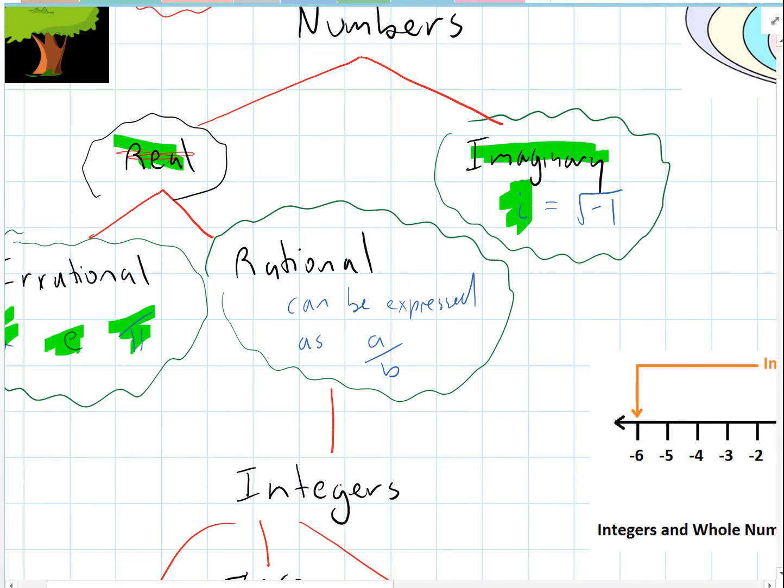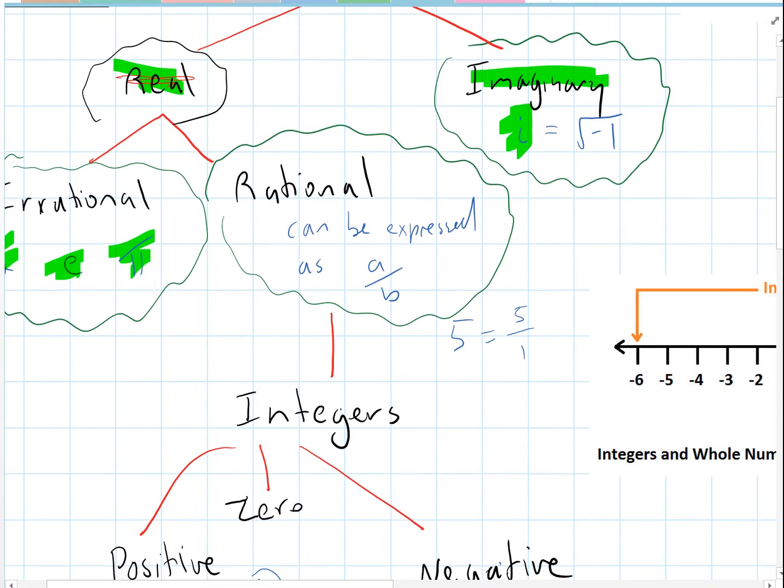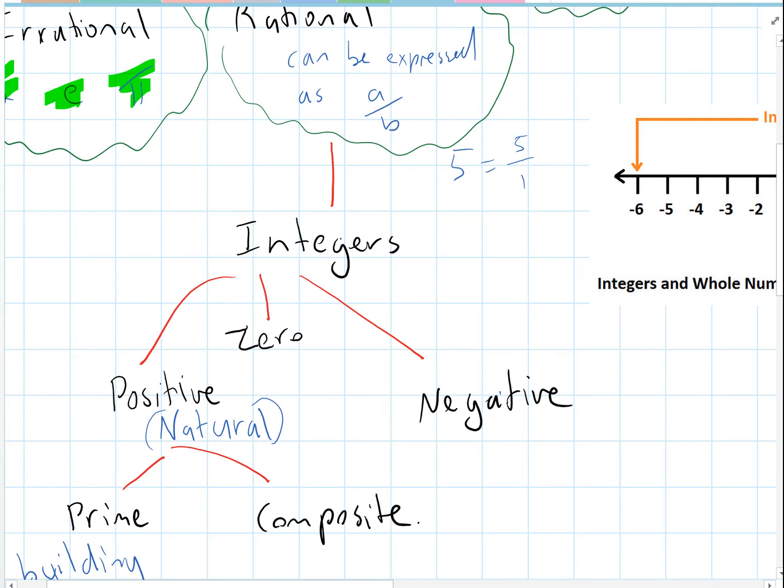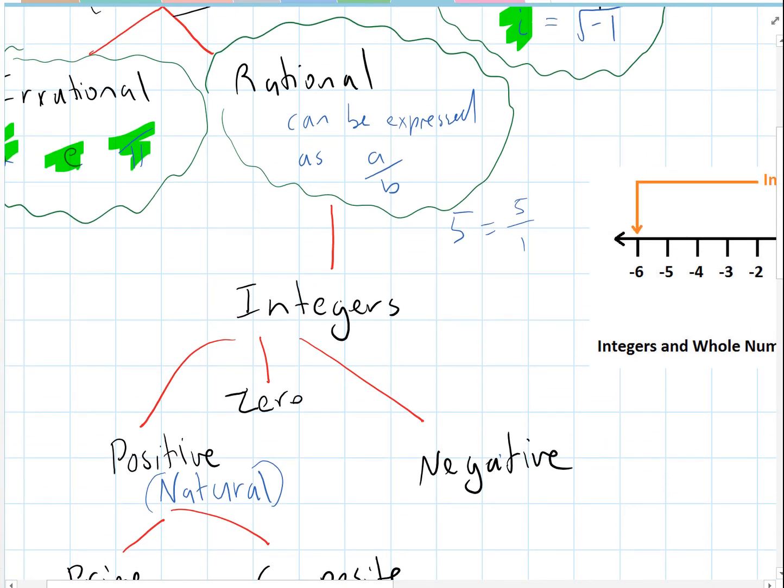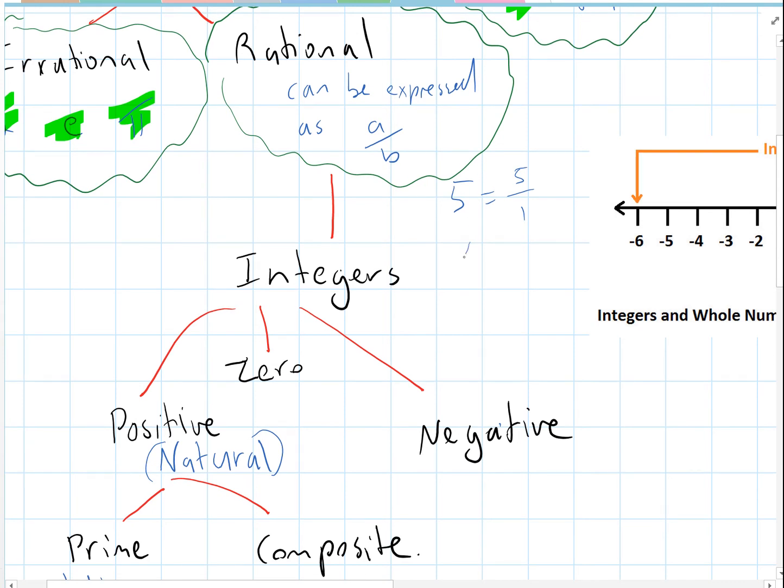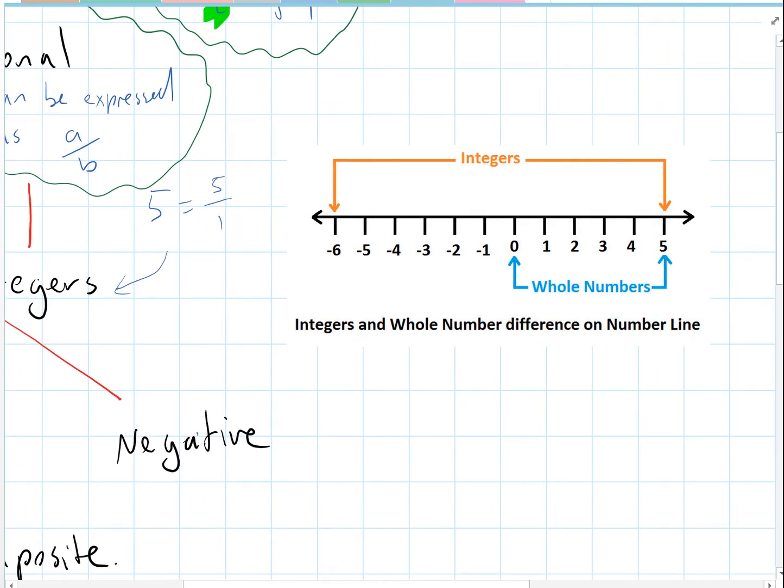For example, the number five we can express as five over one - how many ones fit into five? There's five. A lot of numbers can be expressed as rational numbers. Once we've got the rational numbers, this number here, five, is actually an integer. The integers are these kinds of whole numbers and negative numbers. The whole numbers are these ones over here: zero, one, two, three, four, five. And we've got the negative numbers here.